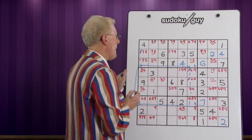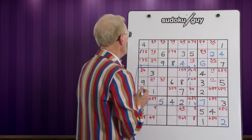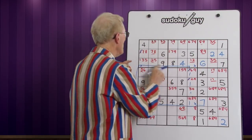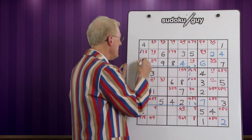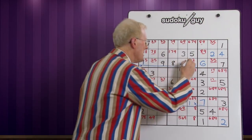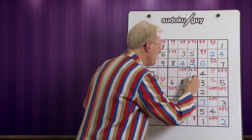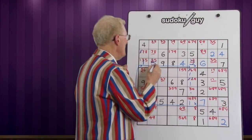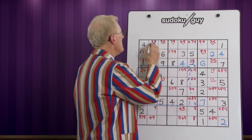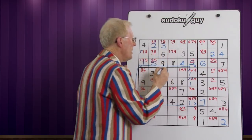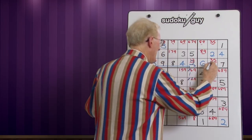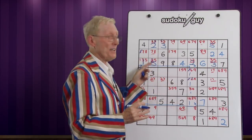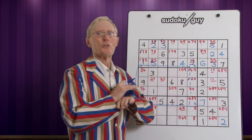Now, if this is the only 1 in this block, that's the only 1 we can find — so that becomes your 1. Which means this becomes a 2, which means you get rid of that 2. If you get that 2, this becomes a 5. If you get rid of that 5, that becomes a 2. If you get rid of that 2, this becomes a 3. And look: if this becomes a 5, that becomes a 3. If that becomes a 3, that becomes a 5. Just from that one discovery that there was only one place for a 1 in this block, the whole puzzle can be completed. I'm going to give you this puzzle as a practice one.